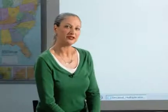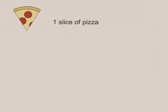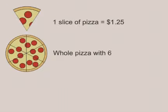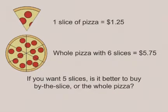Students will also need to be able to apply their understanding of decimal multiplication to solving real-world problems. For example, a slice of pizza costs $1.25. A whole pizza has six slices and costs $5.75. If you want five slices, is it better to buy by the slice or the whole pizza?